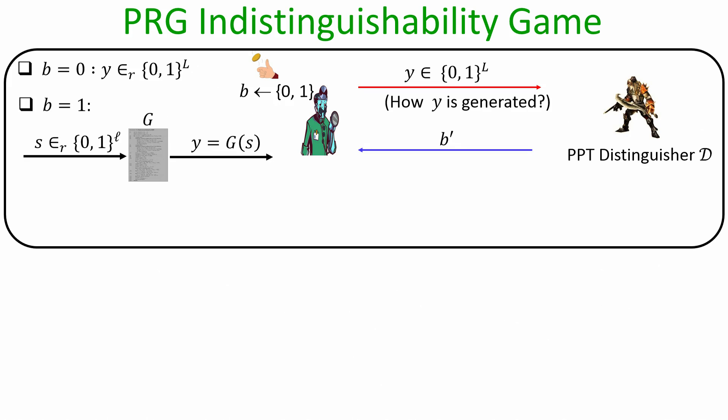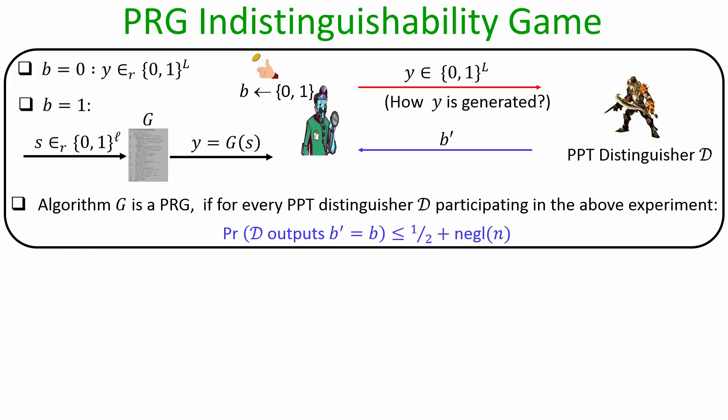The distinguisher has polynomial time to determine whether Y was generated by method 0 or method 1. Its output is a bit b dash. We say algorithm g is a pseudo random generator if for every polynomial-time distinguisher participating in this indistinguishability experiment, the probability that it correctly identifies b equal to b dash is upper bounded by one-half plus some negligible function of the security parameter, where the probability is over the randomness of the distinguisher and the verifier.